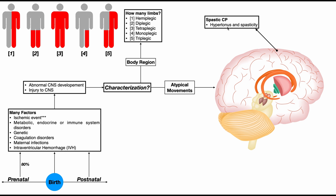True hypertonus is a velocity-independent high tone — the muscle will be high tone at rest, and whether you move the joint slowly or quickly, it's always high tone; that muscle just doesn't want the joint to move. Spasticity, by contrast, is a velocity-dependent hypertonus: if you move the joint very slowly, you may not see an increase in tone. But spasticity involves an exaggerated stretch reflex, so if you move the joint very quickly, that muscle will reflexively over-contract, producing high tone only during fast movement.